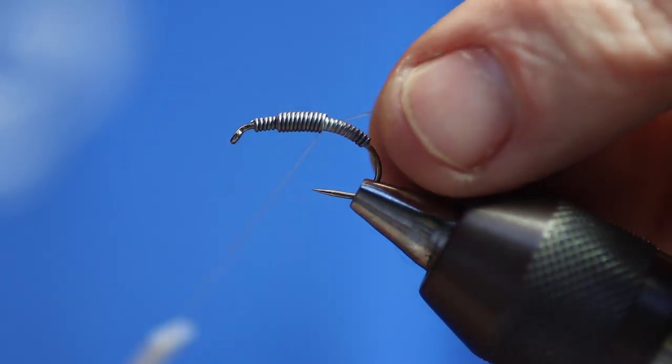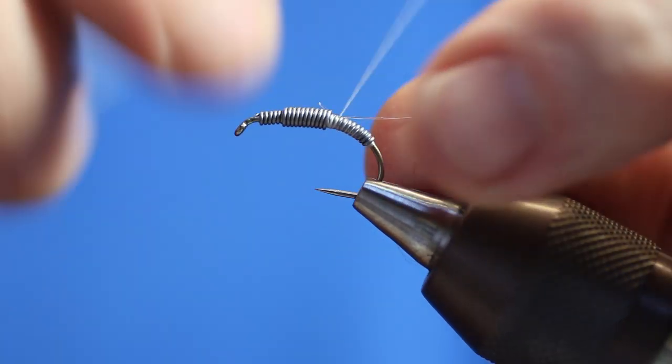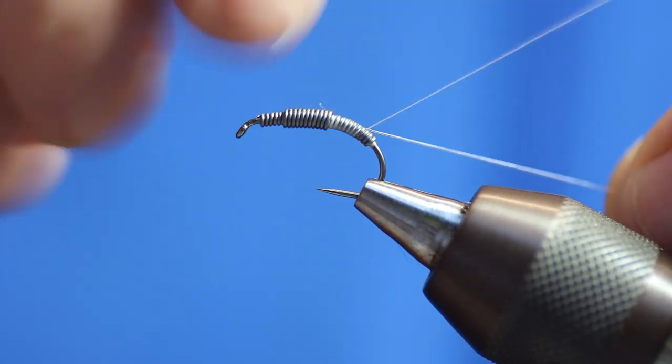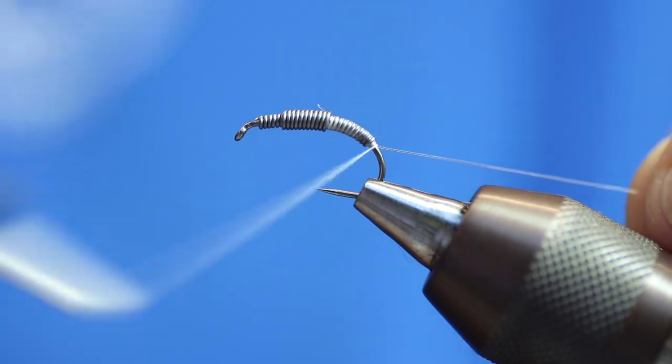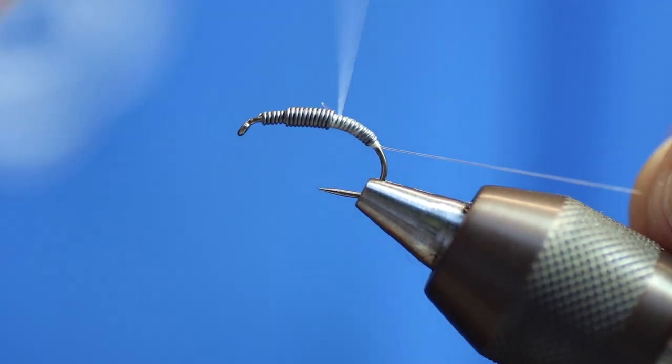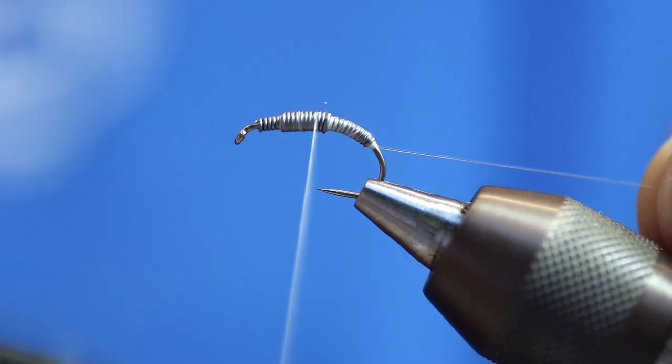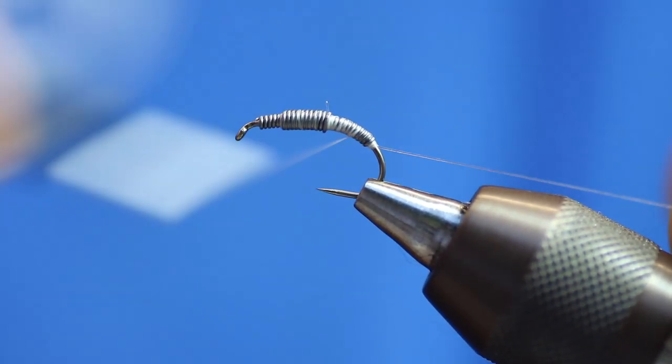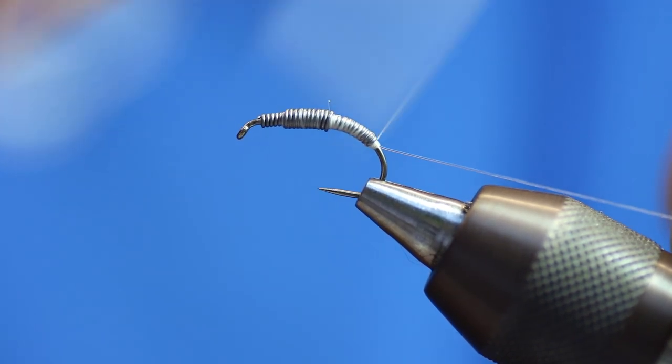So I'm now going to tie in my rib, catch that in and just tie it down. This is all I'm doing is trying to cover the lead up as best as possible, because I want a white underbody, so it's going to take a bit of time. We could use 140, but that's UTC 70.